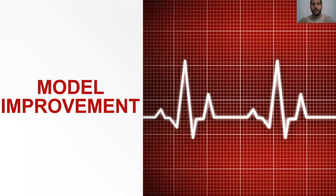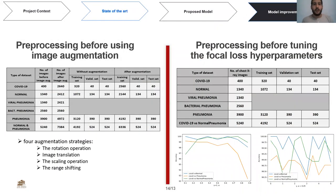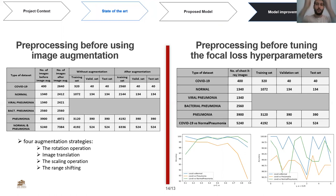After identifying the best pre-trained models using a fixed pair of alpha and gamma, we will now use two techniques to enhance model performance: image augmentation and tuning of the focal loss hyperparameters. Four augmentation strategies were used — rotation, image translation, scaling, and range shifting. The class containing the maximum number of images, which is bacterial pneumonia, was used as-is, and the other classes were augmented to reach about 2,500 images. For hyperparameter tuning, gamma was varied in the interval [0, 5] for fixed alpha equal to 0.25, and alpha was varied in the interval [0, 1] for fixed gamma equal to 2. These curves present the variation of accuracy using the validation set.